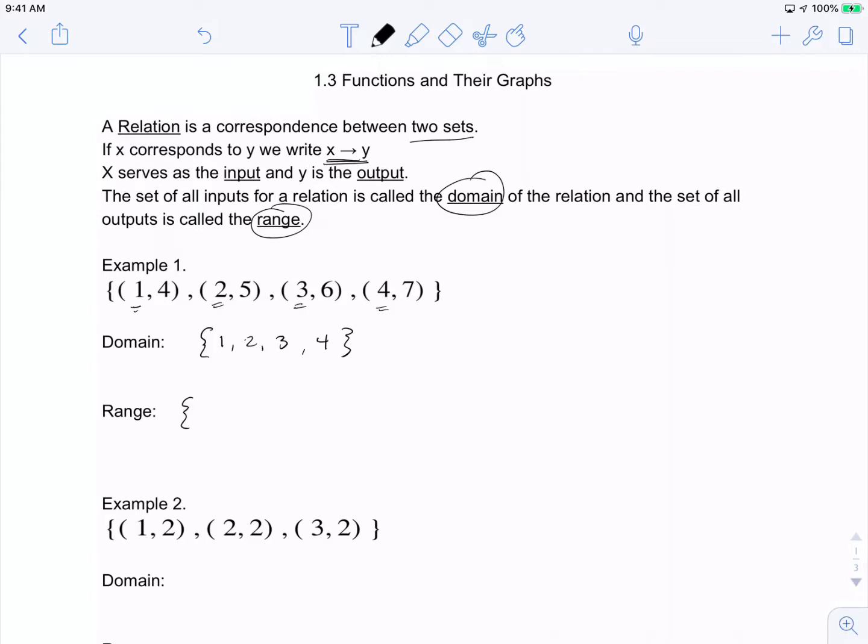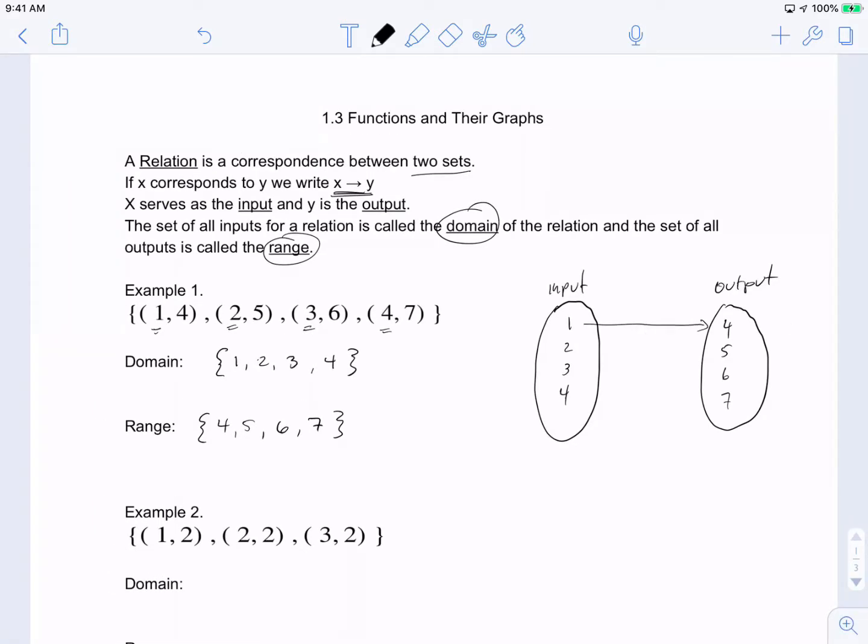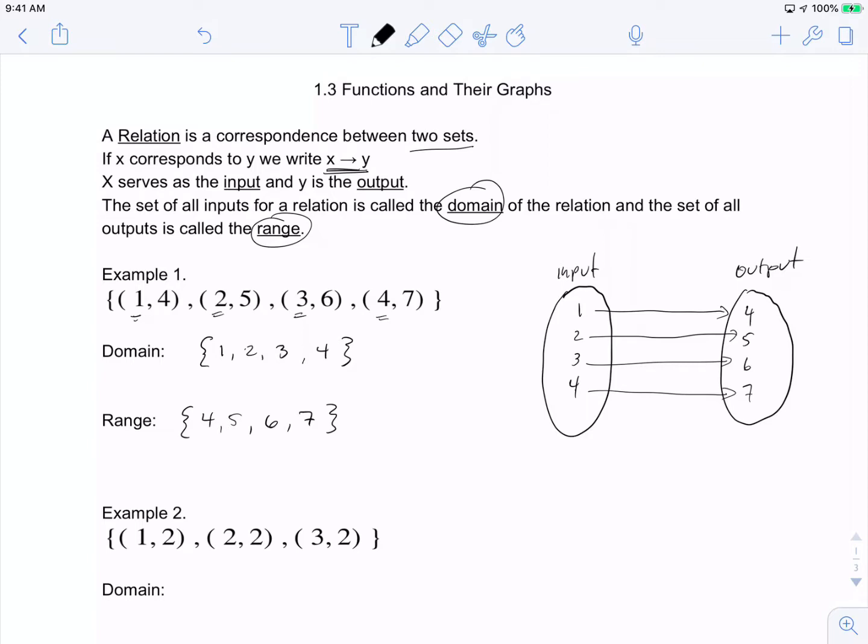Our range is the collection of y values: 4, 5, 6, and 7. To understand if it's a function, we can draw an input circle with values 1, 2, 3, and 4, and an output circle with 4, 5, 6, and 7. We see that 1 maps to 4, 2 maps to 5, 3 maps to 6, and 4 maps to 7.